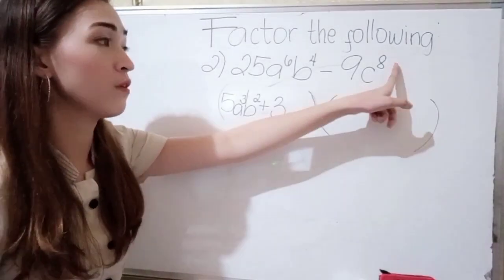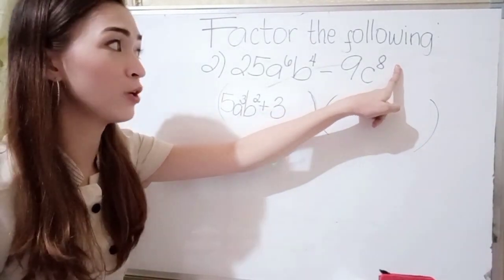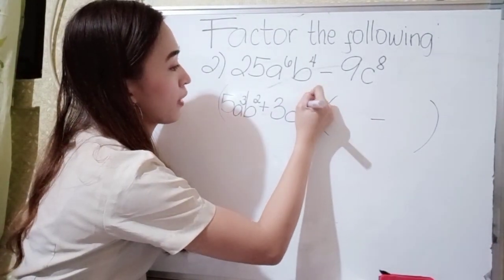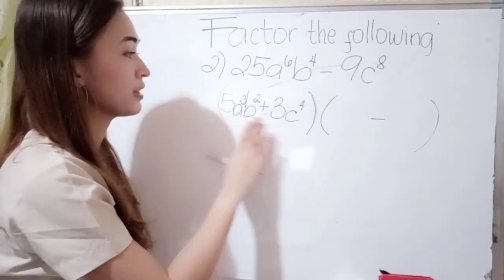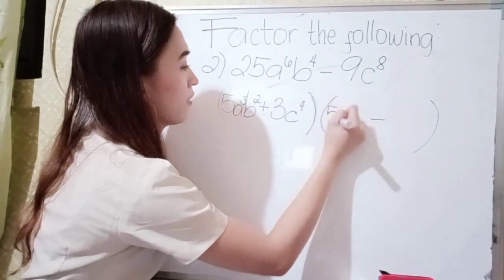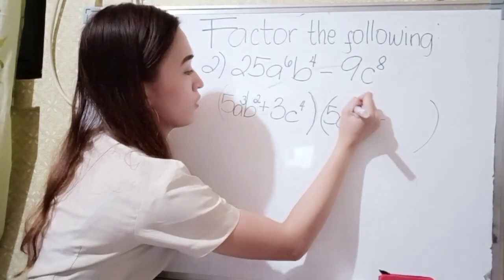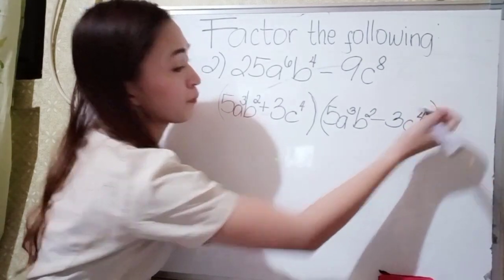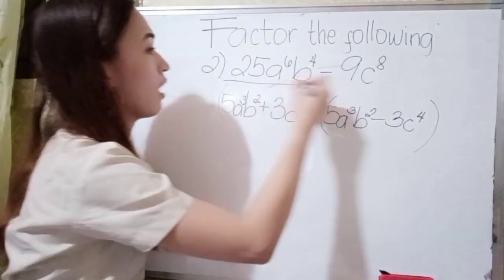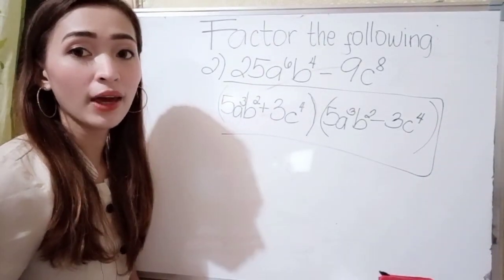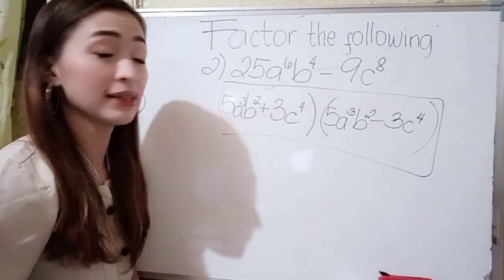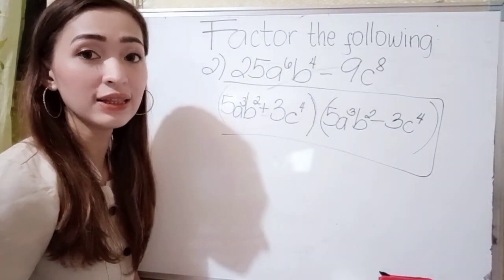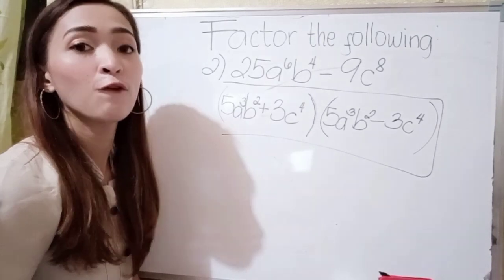For our c, the exponent is 8, so divide it by 2. So 8 divided by 2 is 4, giving us c to the 4th power. So now just copy this. Our final answer is 5a cubed b squared plus 3c to the 4th power, times 5a cubed b squared minus 3c to the 4th power.